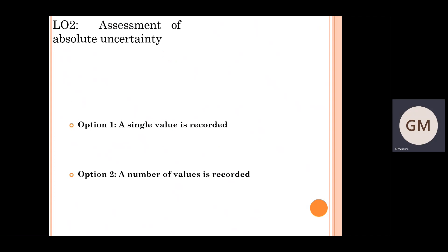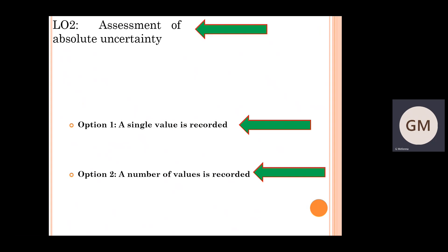That ticks off the requirements of this lesson two, all about absolute uncertainties. We've gone through in detail single values — straightforward — and the more complex practicals whereby a number of values were recorded, determining the absolute uncertainty there as well. That finishes up this second lesson.